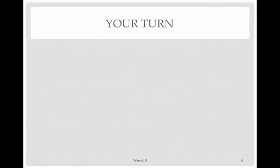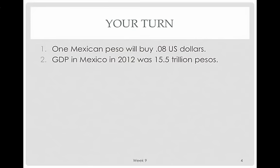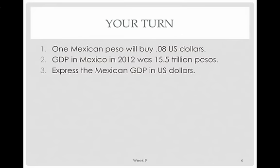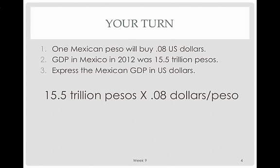Let's try a practice problem. Say one Mexican peso will buy 8 cents in US dollars, and GDP in Mexico in 2012 was 15.5 trillion pesos. What is that GDP converted to US dollars? Every peso is 8 cents, so you multiply 15.5 trillion pesos times $0.08 per peso. The pesos cancel out and you get 1.24 trillion US dollars — now we can make a comparison.